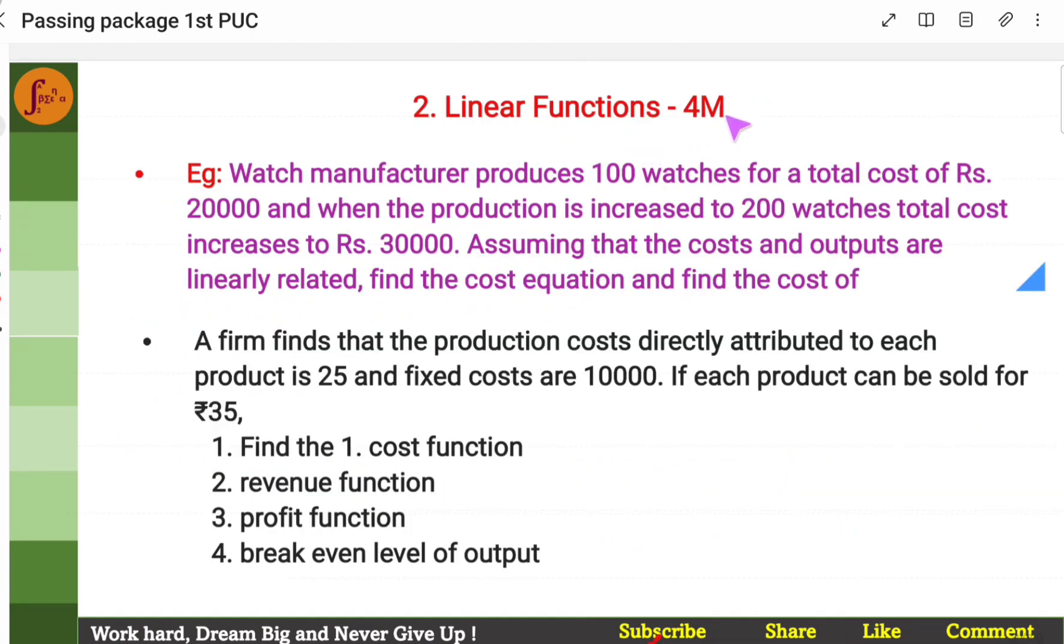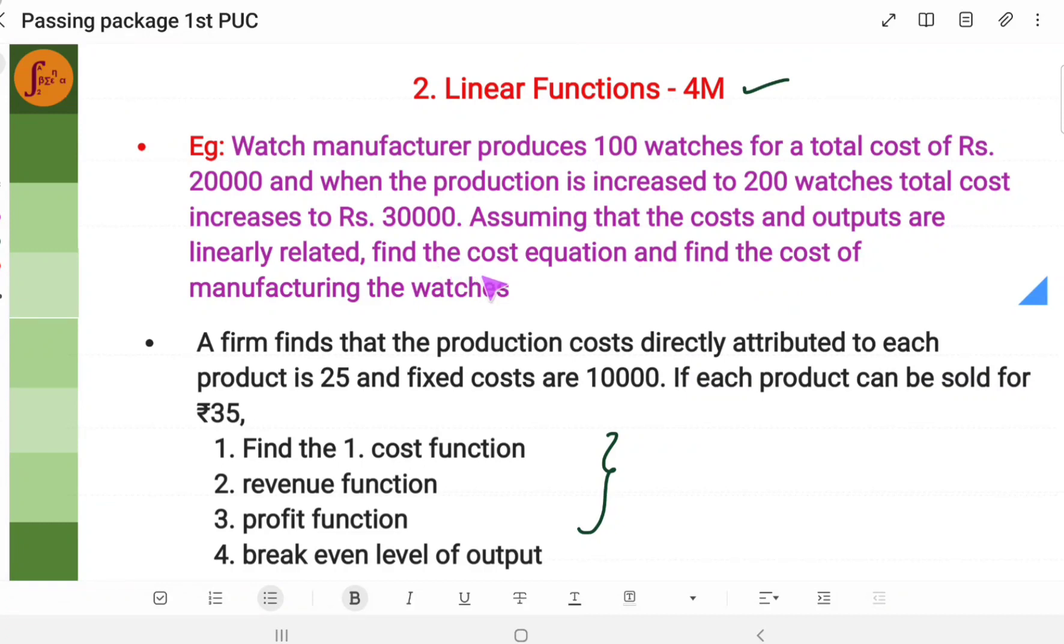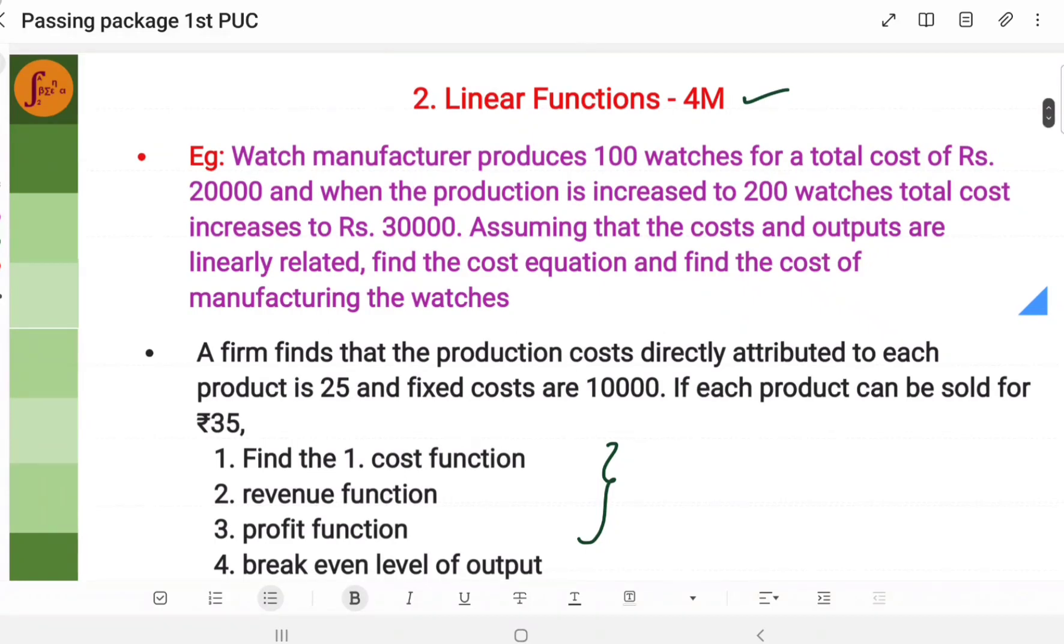Next one is linear functions. Again, this is 4 marker. Here, we will have questions like, we will have to figure out cost function, revenue function, profit function, break-even level of output. These are actually direct straightforward problems. And there could be problems where you will have to find the cost equation and get the cost of the product, be it watches or books or whatever. Again, this is a 4 marker question.